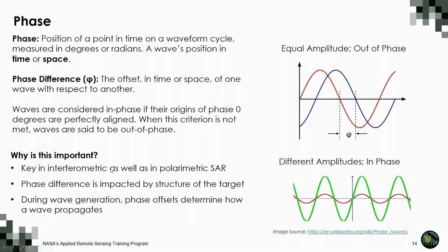Phase is important in radar for many reasons. It is critical for interferometric applications and for generating polarimetric radar datasets. When we generate a wave, we know its intensity, frequency, incidence angle, polarization, and phase. But when a wave interacts with a target, the phase can change depending on the structure of that target. If we send out a wave of known phase and it returns with an altered phase, that gives us clues about the target that we can exploit in data analysis.